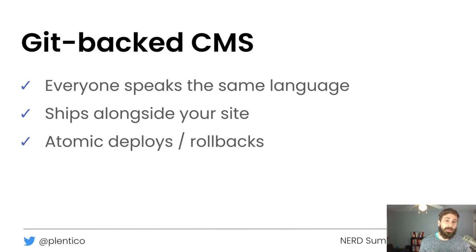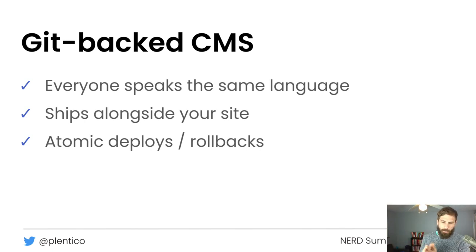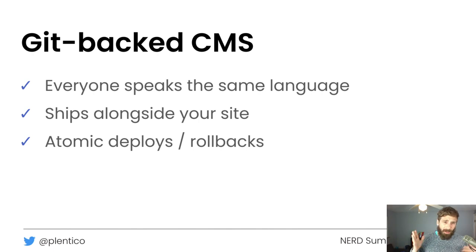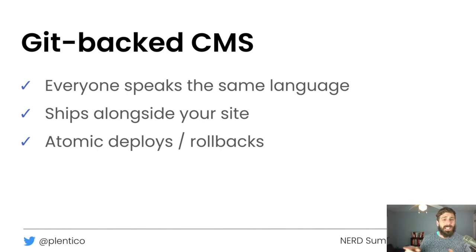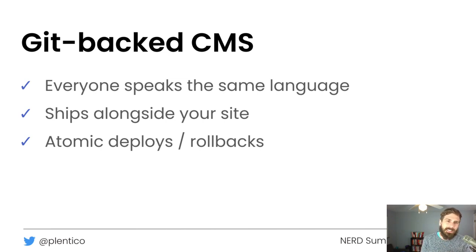The Git-backed CMS is also great for atomic deploys. Atomic deployments mean the full site is built and deployed every single time a change is made, giving you a full copy of the site. If you ever need to roll back, it's trivial to go to another working version. It also allows powerful things like different deployments based on different branches — your main branch goes to production, your dev branch goes to a dev environment — creating a tight-knit system without a lot of overhead.